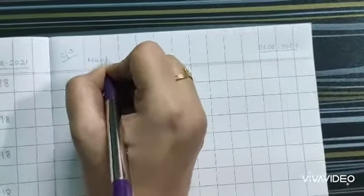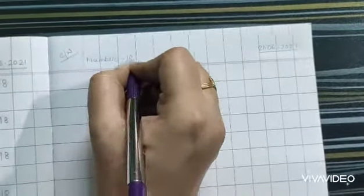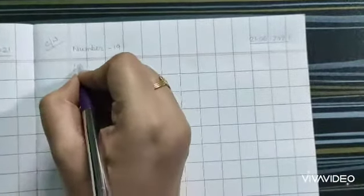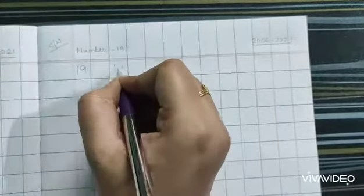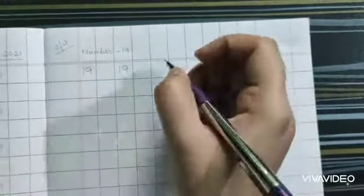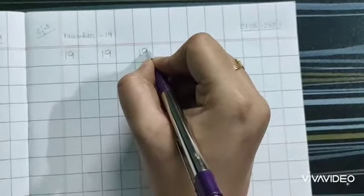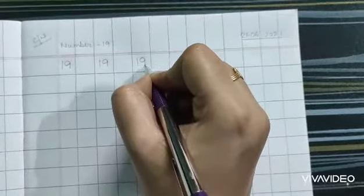Heading number 19. 1, 9, 19. So at first write 1 then 9. And how to write 9? At first draw the circle, then draw standing line. Okay.